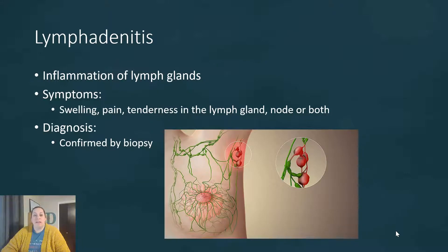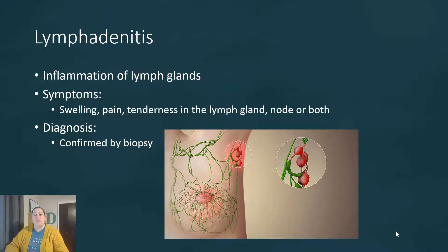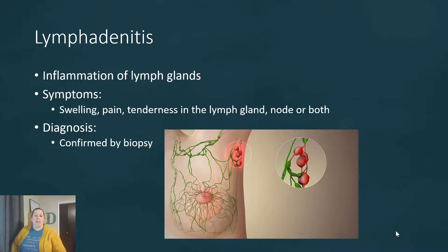Lymphadenitis is inflammation of the lymph glands themselves, or the lymph nodes. Symptoms are swelling, pain, and tenderness in the lymph gland or node — a lot of times they palpate and look for tenderness and swelling. Sometimes you might have a feeling in your underarm or groin area where it's tender and inflamed — this could be where a lymph node captured something and it's working on fighting that infection. Diagnosis is confirmed with a biopsy if it becomes too severe; however, a lot of times this may resolve on its own. If not, we may need to remove those lymph nodes, similar to tonsils or adenoids if they become constantly inflamed.